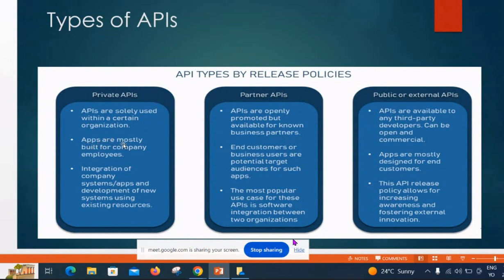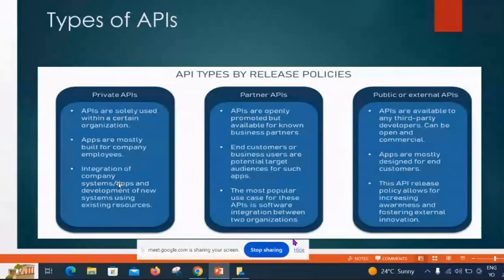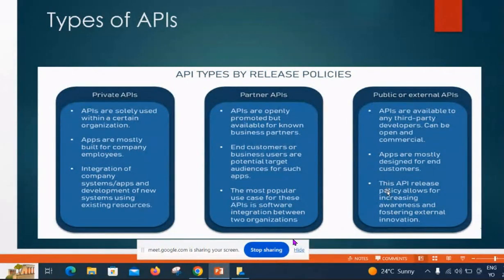For partner APIs, customers or business users are the potential target audience. For public or external APIs, apps are mostly designed for end customers. Use cases include integration of company apps, and development of new systems using existing resources. The most popular use case is software integration between two organizations — for example, Amazon and Google Pay. Public APIs increase awareness and foster external invocation, like Google Maps.